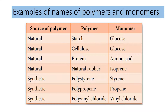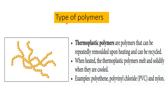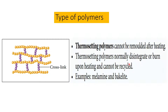We have three types of polymers. The first is thermoplastic polymers — polymers that can be repeatedly remolded upon heating and can be recycled. When heated, thermoplastic polymers melt, and they solidify when cooled. Examples include polyethene, polyvinyl chloride, and nylon — like ordinary plastics used at home, such as Tupperware.